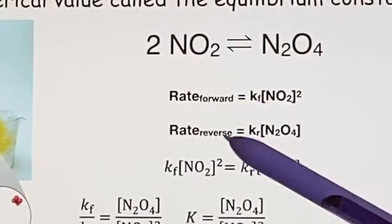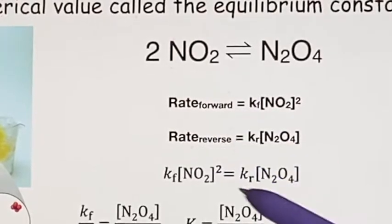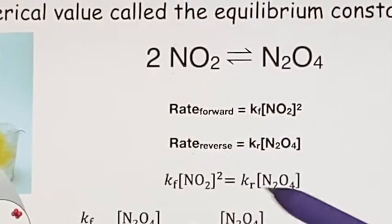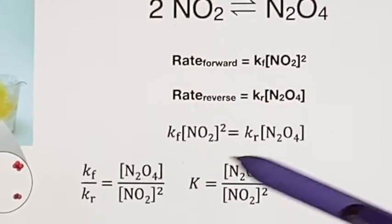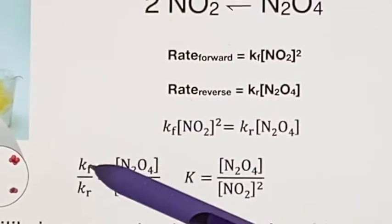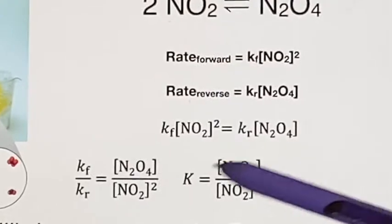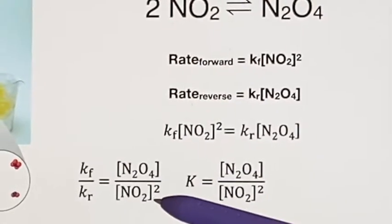At equilibrium, these two rates are equal, so the numerical expressions for them are equal. We can rearrange this formula to make Kf over Kr. And that would then put all of the concentrations on one side.